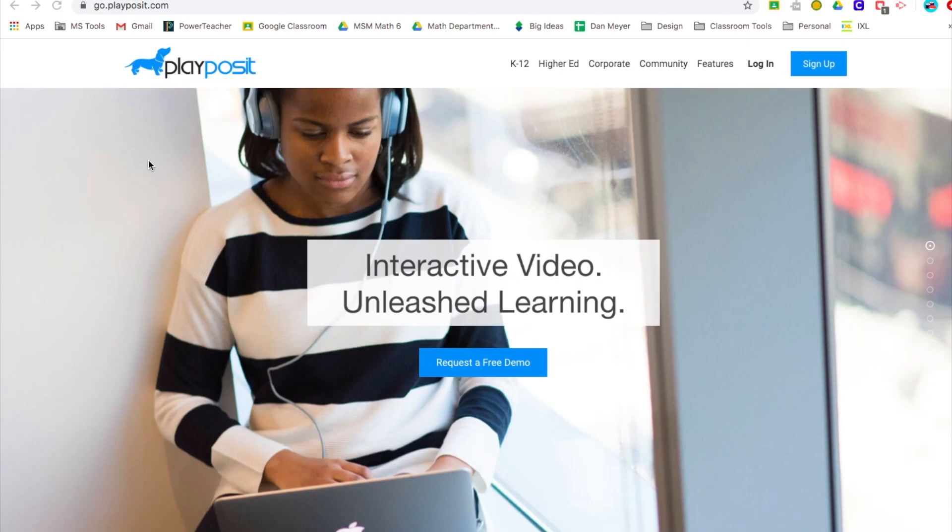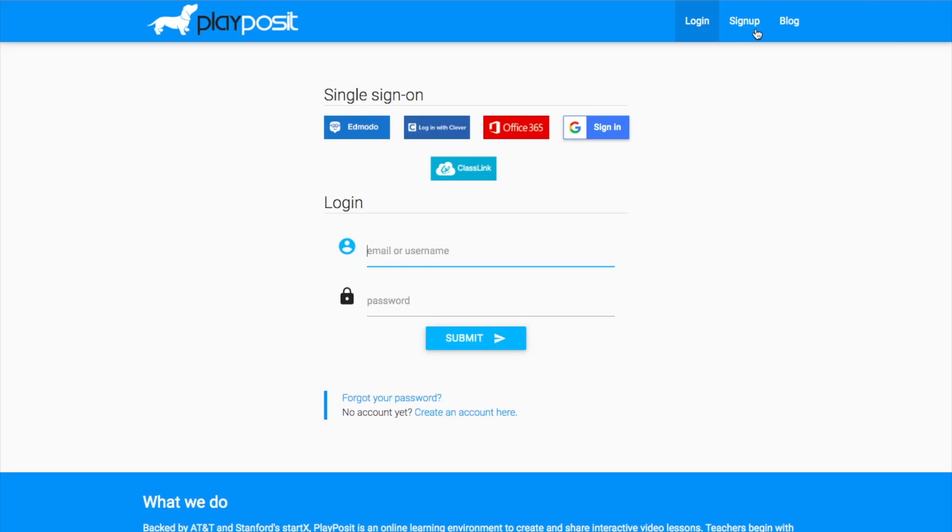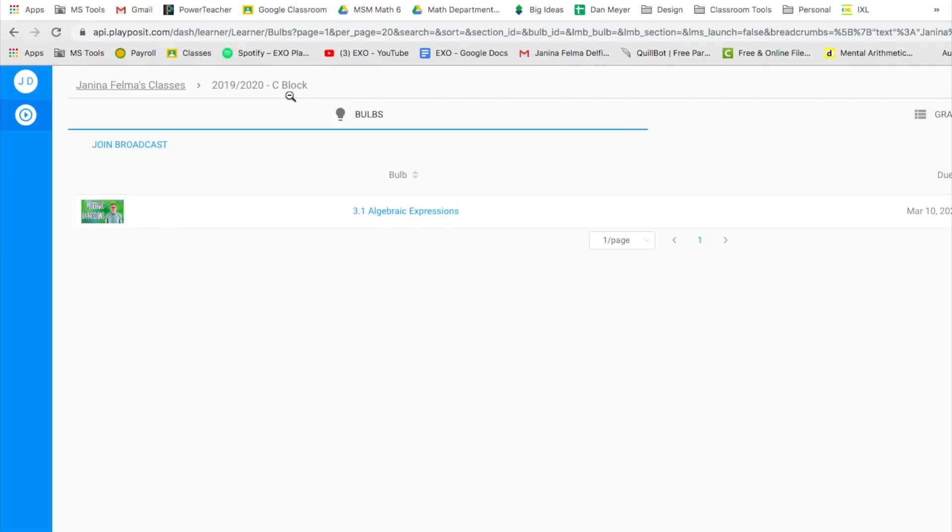First, go to the website go.playposit.com and log in. Your login is going to depend on your school and what your teacher has set up for you. Once you have signed in, make sure you're in the right class. If your teacher has set up classes you should see your class up here at the top. Once you're in the right spot, you should be able to see the bulbs that have been assigned. Those are the video assignments that your teacher has made for you.